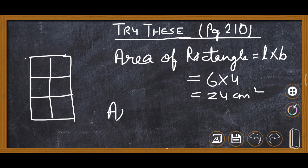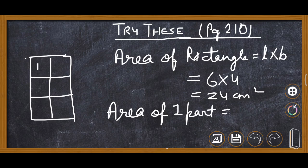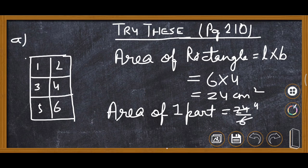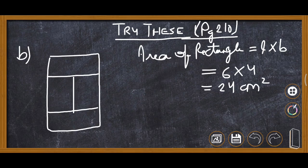Now we find the area of one part for the first figure. Counting the parts: 1, 2, 3, 4, 5, 6 — there are 6 parts total. So the area of one part is 24 divided by 6, which equals 4 centimeter square.